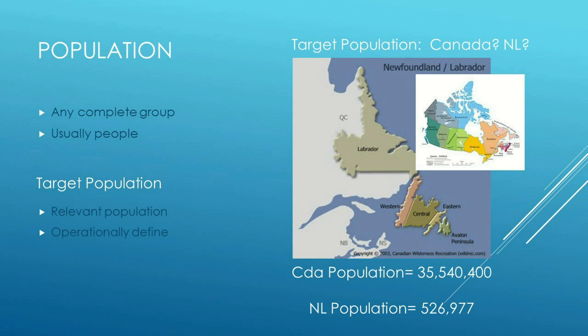For example, when thinking about population, are we talking about the country of Canada? That could be a population group. Or if we're only talking about the province of Newfoundland and Labrador, or even just a town — those could each be a population group. Depending on what we're researching, the population will vary. The population is as we define it, and we have to define exactly what is meant by the relevant population whenever we do this research.